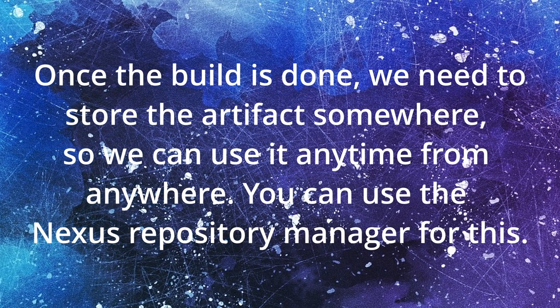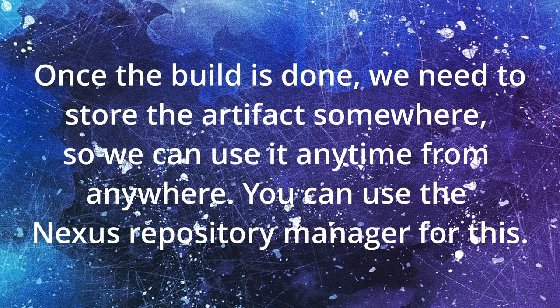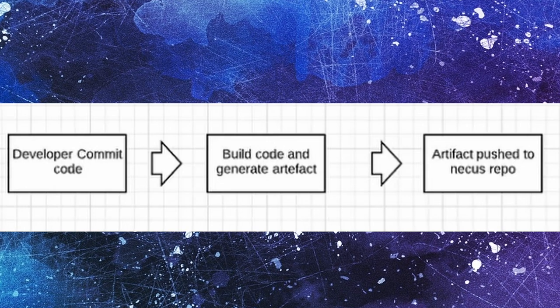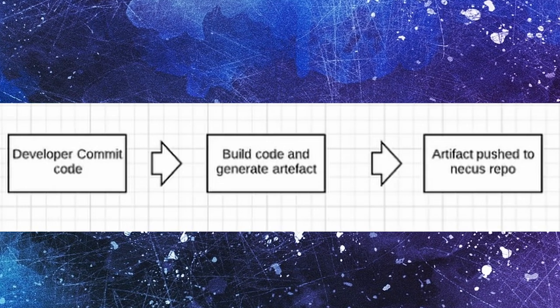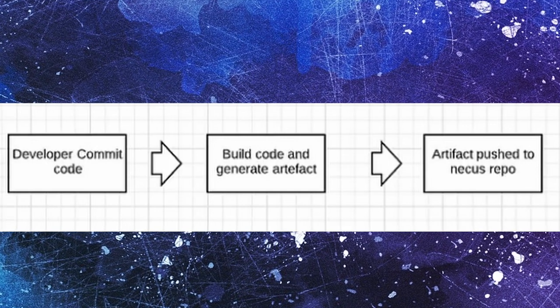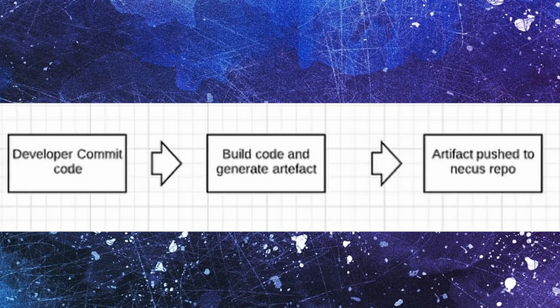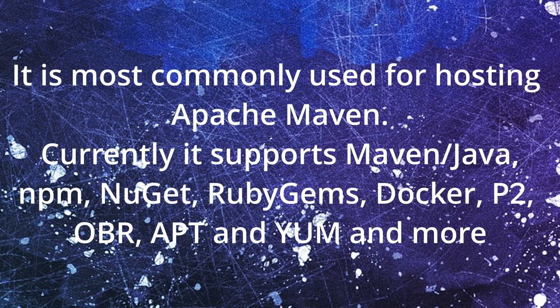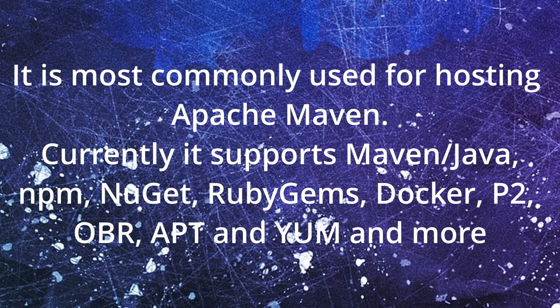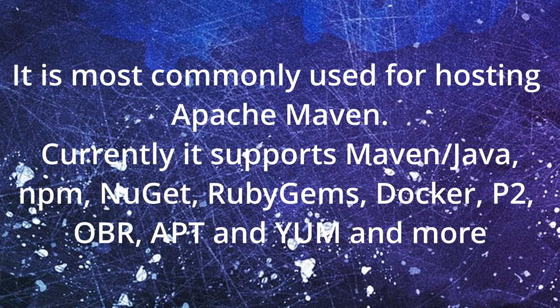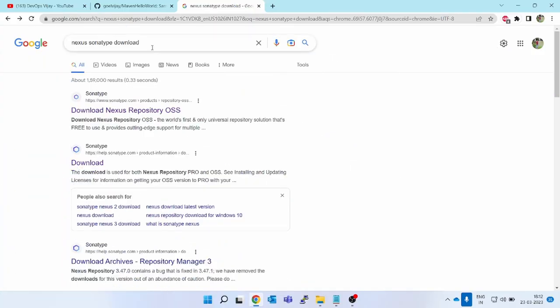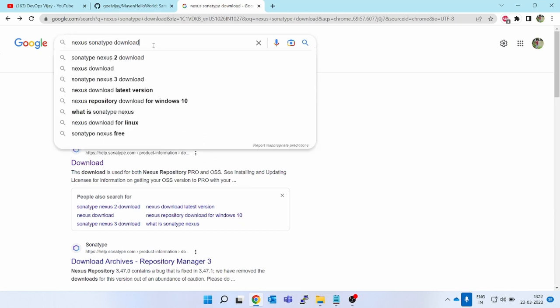To achieve CI/CD in your project, suppose you have code in your GitHub source code repository. You make a change, do the build on one of the Jenkins slave agents using the Jenkins continuous integration tool. Once you are done with the build, you have to deploy on multiple servers and multiple environments. So after building, you upload the artifact generated from your Java or .NET project into Artifactory or Nexus.